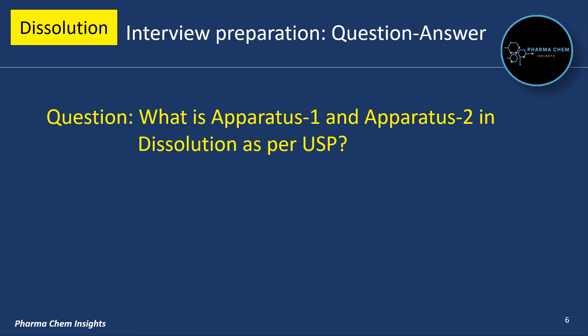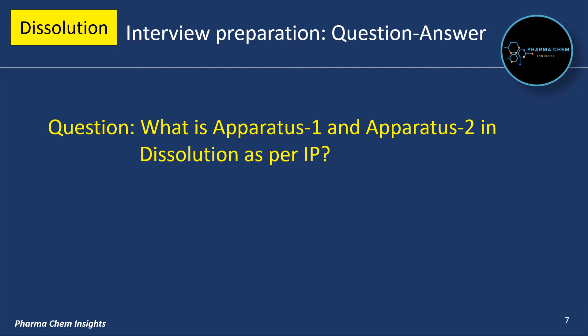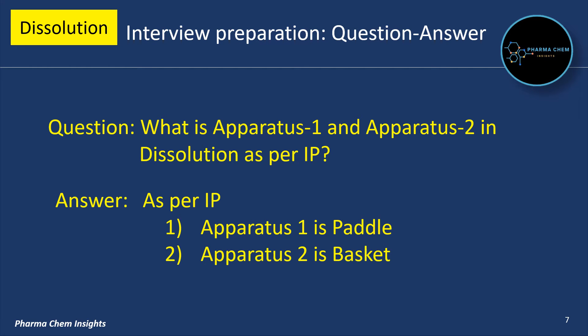What is apparatus 1 and apparatus 2 in dissolution as per USP? As per USP, apparatus 1 is basket and apparatus 2 is paddle. As per IP, it is vice versa — apparatus 1 is paddle and apparatus 2 is basket.